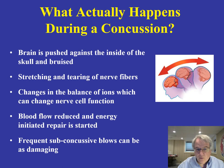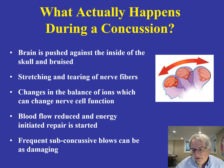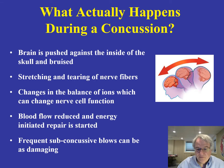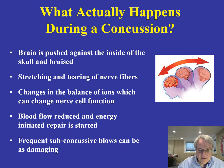What actually happens during a concussion is that the brain is being pushed up against the inside of the skull, and you're getting bruising of that tissue. In some cases, it's stretching and tearing nerve fibers. You're getting a change in those really important ions we've talked about in terms of action potentials, which can really change the way nerve cells actually function. Blood flow is being reduced, and a lot of energy is being directed to trying to repair that area of the brain.